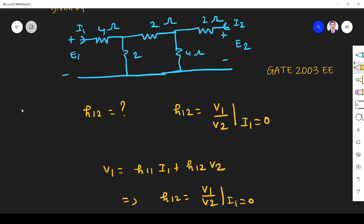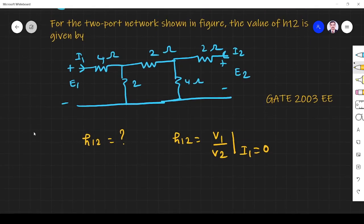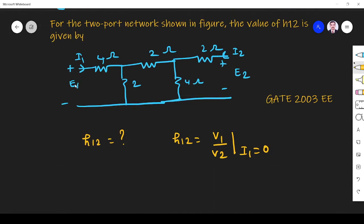When i1 is 0, h12 is v1 by v2. So I want to find v1 by v2 for this circuit. Let me erase this and write here. So this is e1. E1 is here. I have to make i1 equal to 0. i1 should be 0 means this should be 0, which means it is short circuit because there is no drop here.